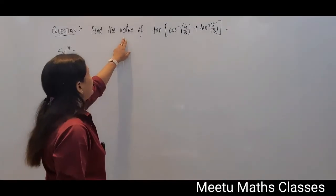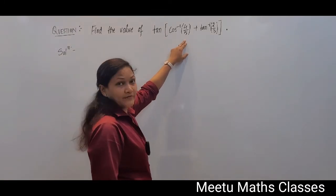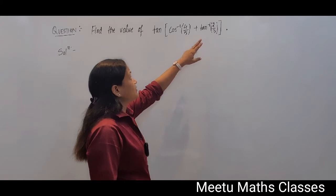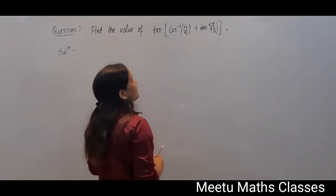Your question is find the value of tan of cos inverse of 4 by 5 plus tan inverse of 2 by 3. So you are going to find the value of this function.